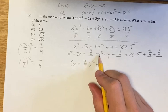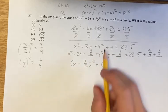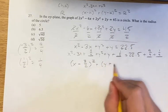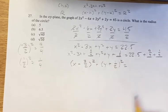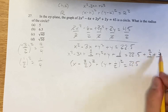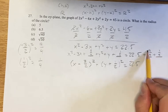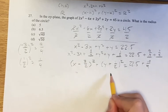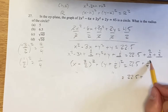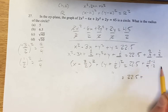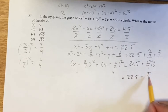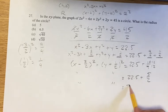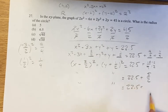Then plus y squared plus y plus 1 fourth. Similarly, the constant k comes from the y terms — we need y plus 1 half, squared. This equals 22 and a half, and then we add 9 fourths plus 1 fourth, which share the same denominator, giving plus 10 fourths. Simplifying 10 fourths: 10 divided by 2 is 5, 4 divided by 2 is 2, so that's 5 over 2, which is 2 and a half.